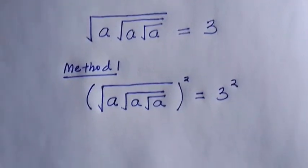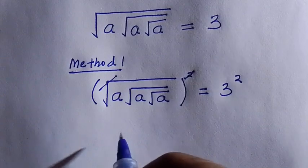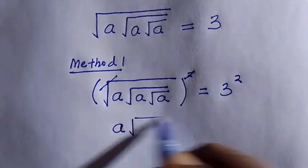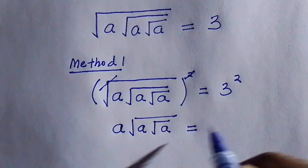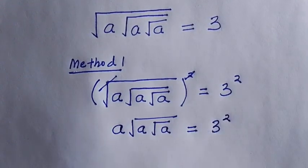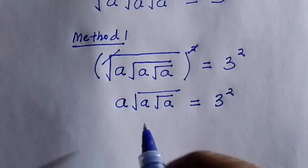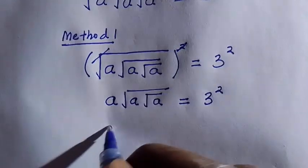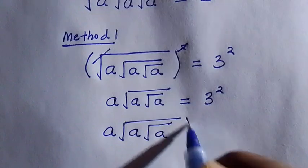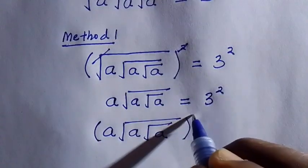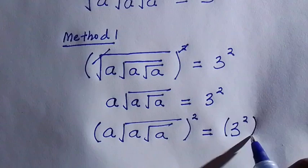Next we have, when this square cancels the square root, at this point we have a root a root a equals 3 squared. Then we have to take another square of this for the second time, as we have this as a root a root a raised to the power of 2 equals 3 to the power of 2, raised to the power of 2.